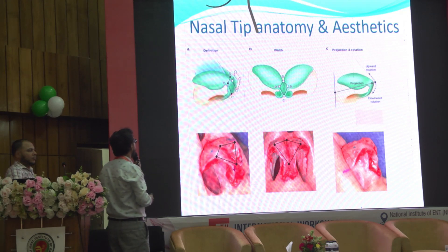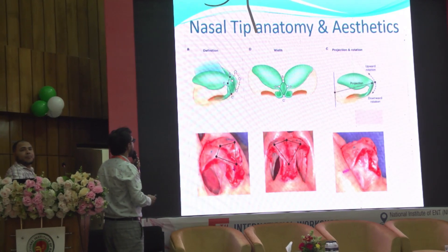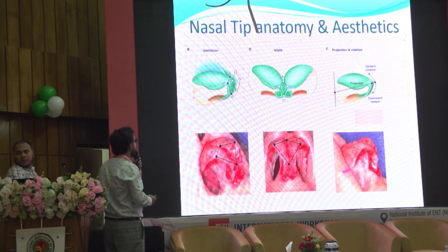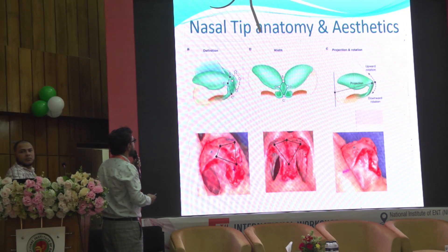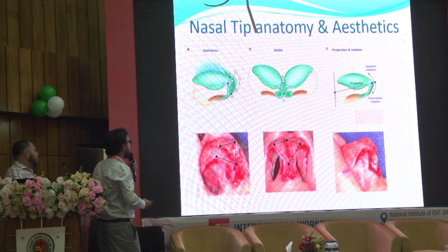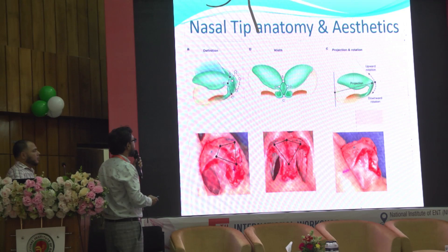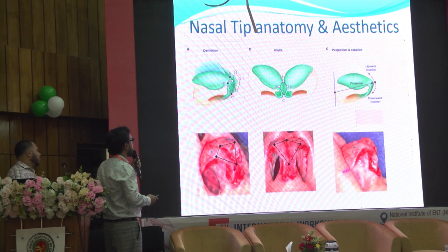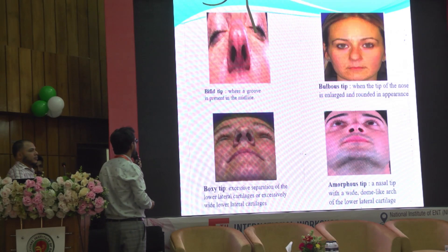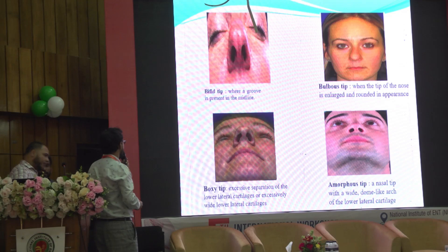Tip rotation is the tip angle measured from the vertical plane of the lower lateral cartilage to the tip — 100 degrees in males and 105 degrees in females. Tip shape can be three types: broad tip, bulbous tip, and boxy tip. The tip diamond is formed by the two domal points, the supertip break, and the columellar break. The lateral crus direction is 45 degrees with the midline, oriented toward the lateral canthus.